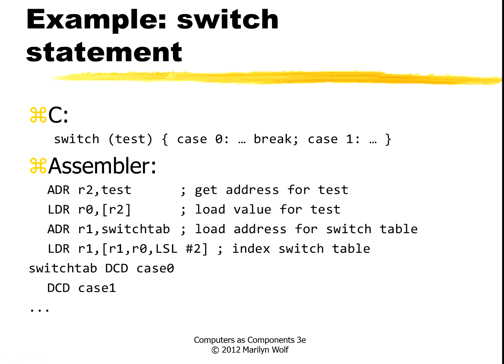If we look at a switch statement in C, we have a value that can go to several different cases — for example, case zero, case one. We can implement that by loading in the value, loading the address for a table, and then we can use our addressing modes to compute the address inside this switch table that we want to jump to.